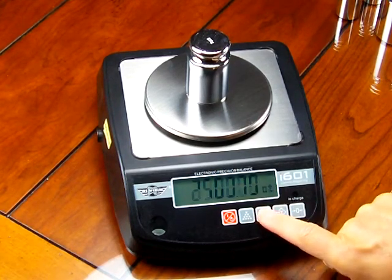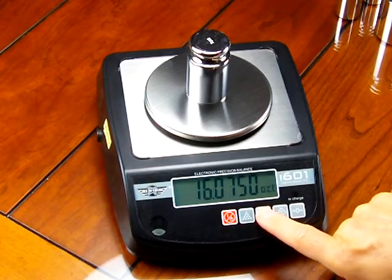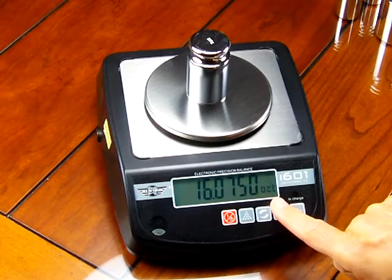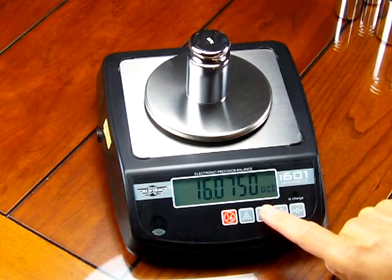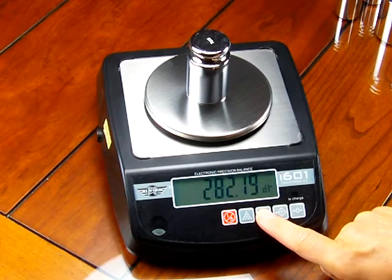Now I have carats. I have ounces. There's troy ounces. You'll notice here on the right hand side of the display, the weight units are changing. If I press it again, I have pounds.